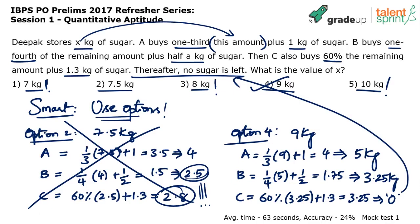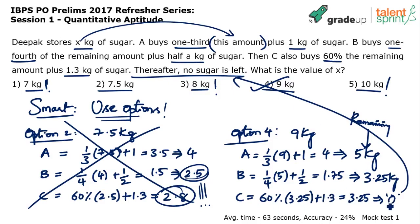Option 4 is correct — 9 kg is the answer. You don't have to solve the question algebraically to arrive at the answer; going by options works perfectly. With x = 9: sold 4 kg to A, then 1.75 kg to B leaving 3.25 kg, then C bought 60% plus 1.3 kg and nothing was left. Option 4, 9 kg, is confirmed correct.